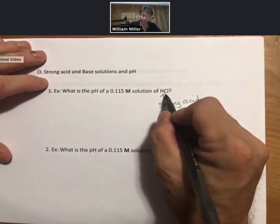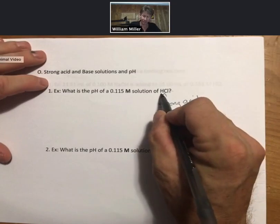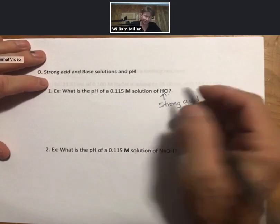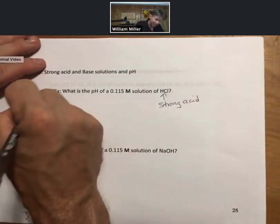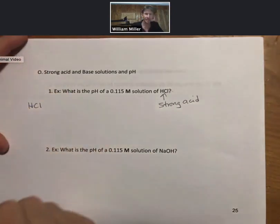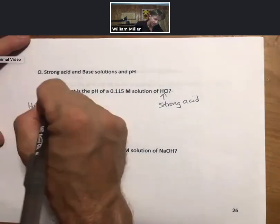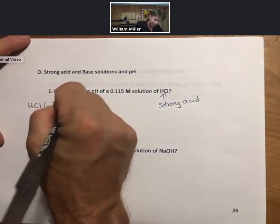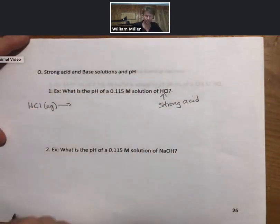It breaks up 100% into hydrogen ions and chloride ions. What I've said before is, if you have a 0.115 molar solution of HCl, it will break up 100%.